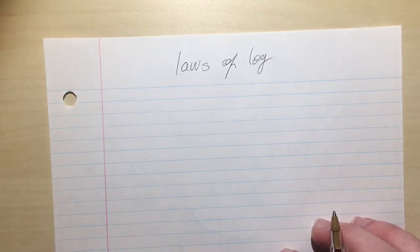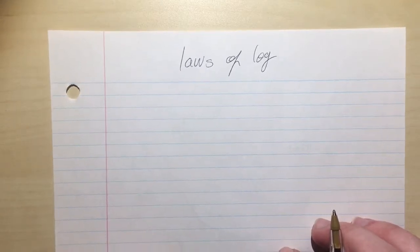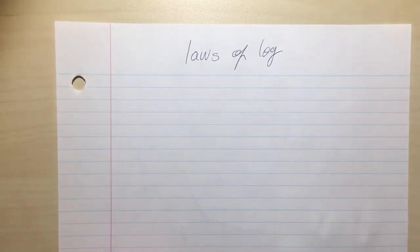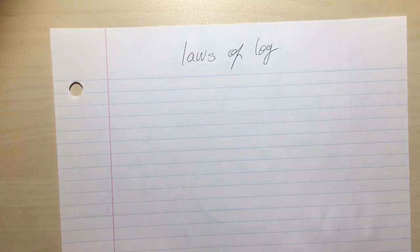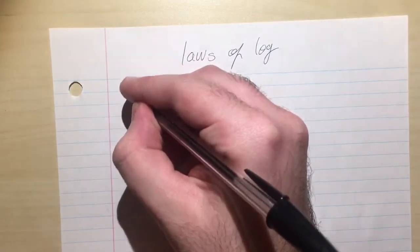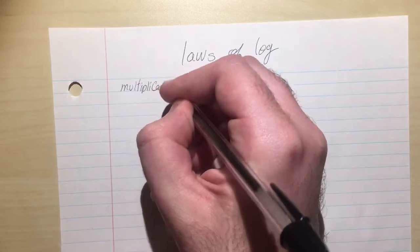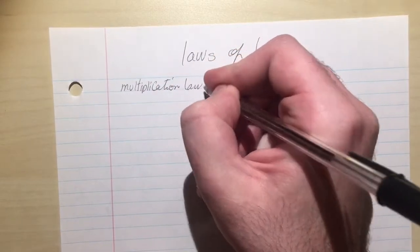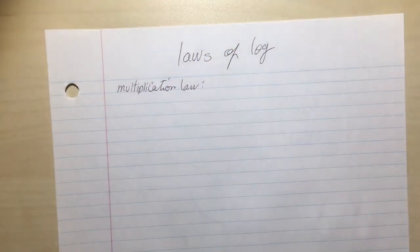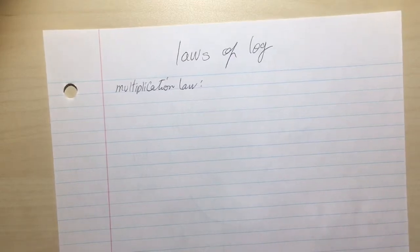But that's an ugly way to learning. And this is the right way. So we have only one rule for log, or one law. And that law is the multiplication law. That's the only law. All laws are derived from this law.